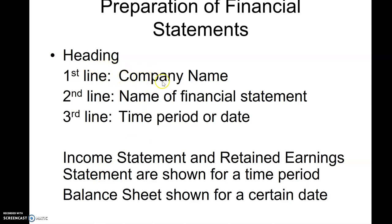When we do a financial statement, we're going to have a heading. The first line gives the name of the company, the second line gives the name of the financial statement, and the third line is either a time period or a date. The income statement and statement of retained earnings cover a period of time, while the balance sheet is only as of the last day of the accounting period — just a single date.